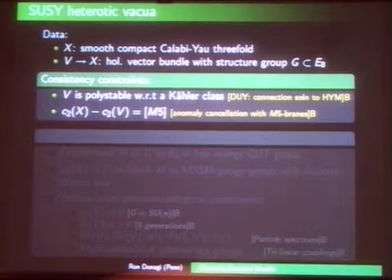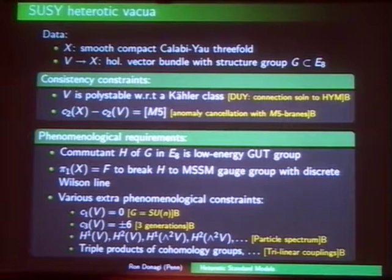The second condition with zero on the right side is the Green-Schwartz anomaly cancellation. With a five-brane on the right side, it allows for heterotic M-theory compactifications where the five-brane is wrapped on some holomorphic curve in the Calabi-Yau. In addition, we have phenomenological requirements to make it look like the standard model.